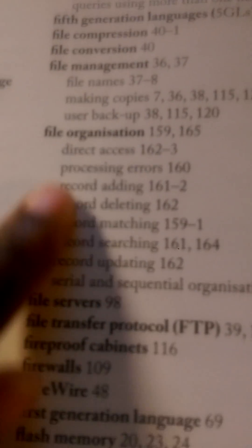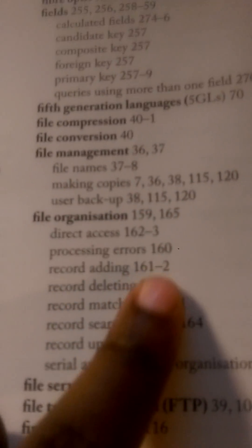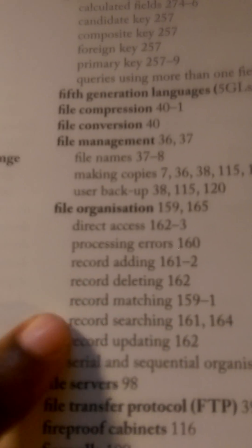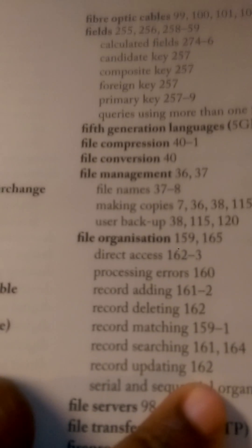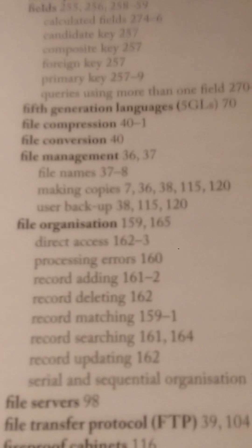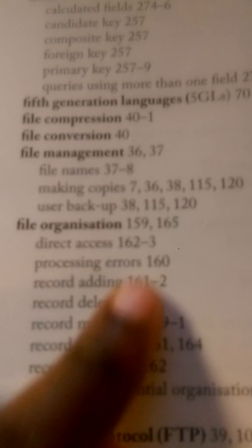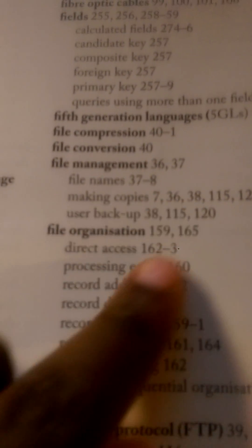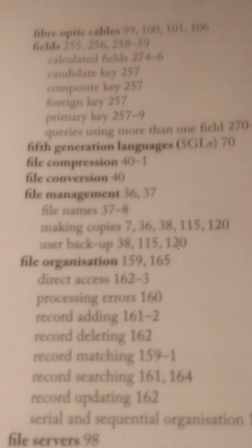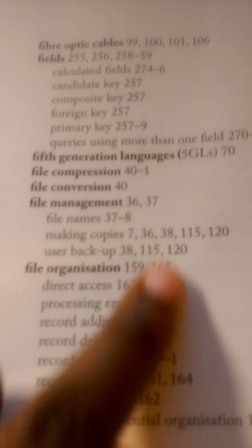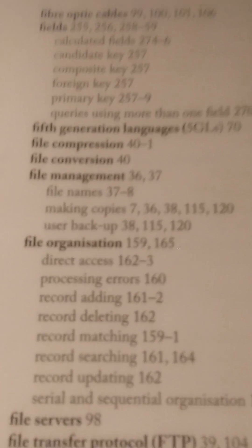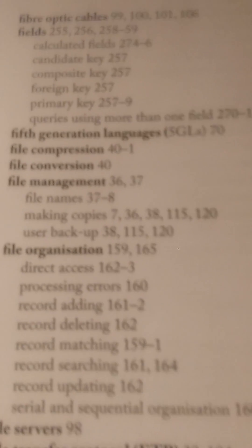We find 'file organization' and then we are directed to the pages on which file organization can be found. All of these page numbers here refer to where that information is located. Notice that these page numbers are not in any specific order — this is the index part of it, or really it's a combination of both.